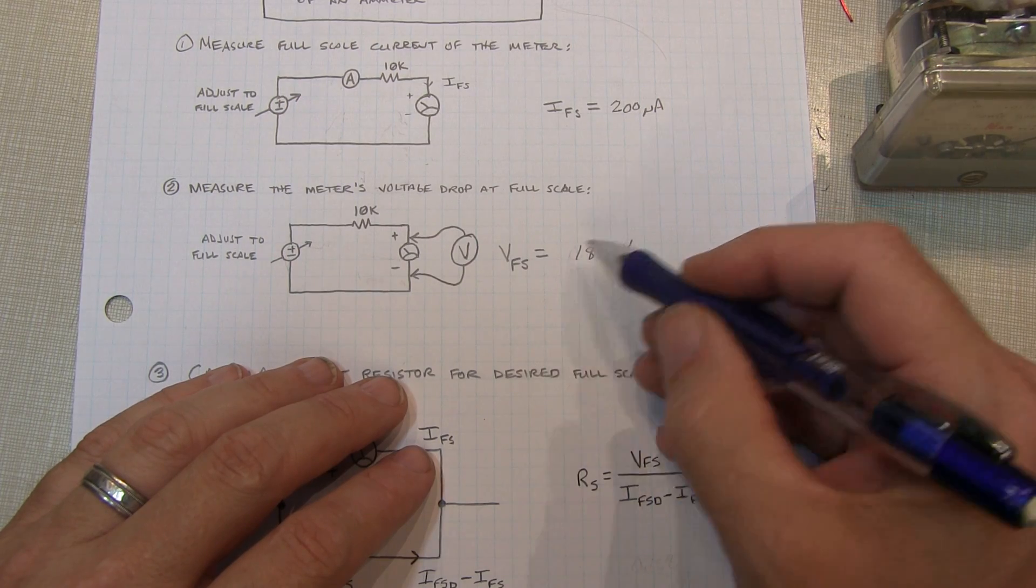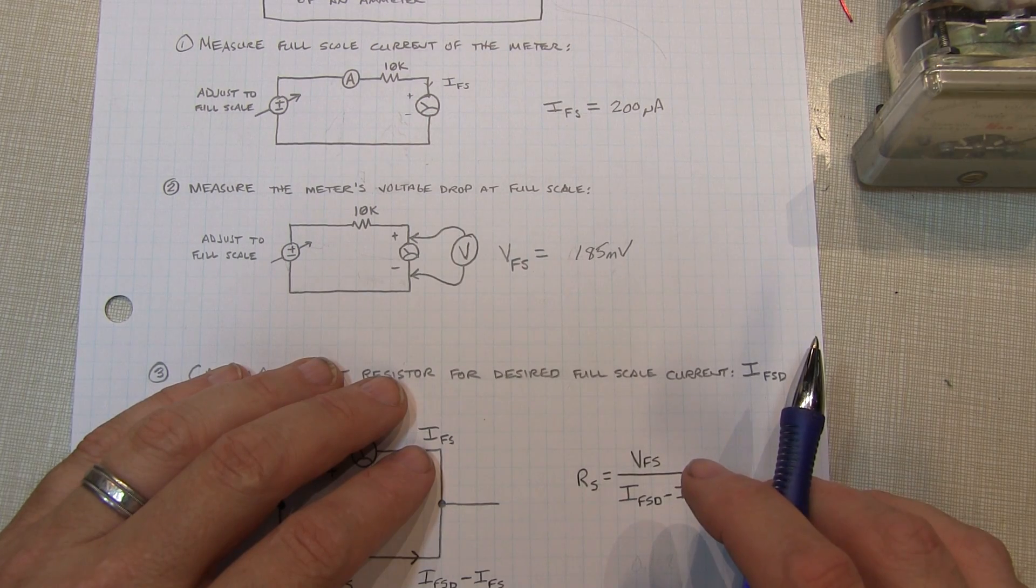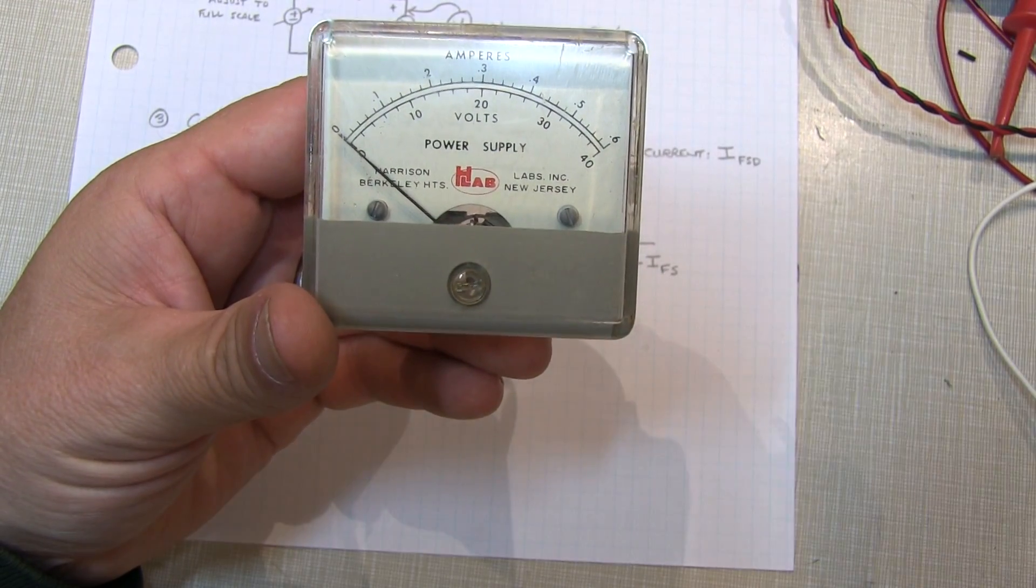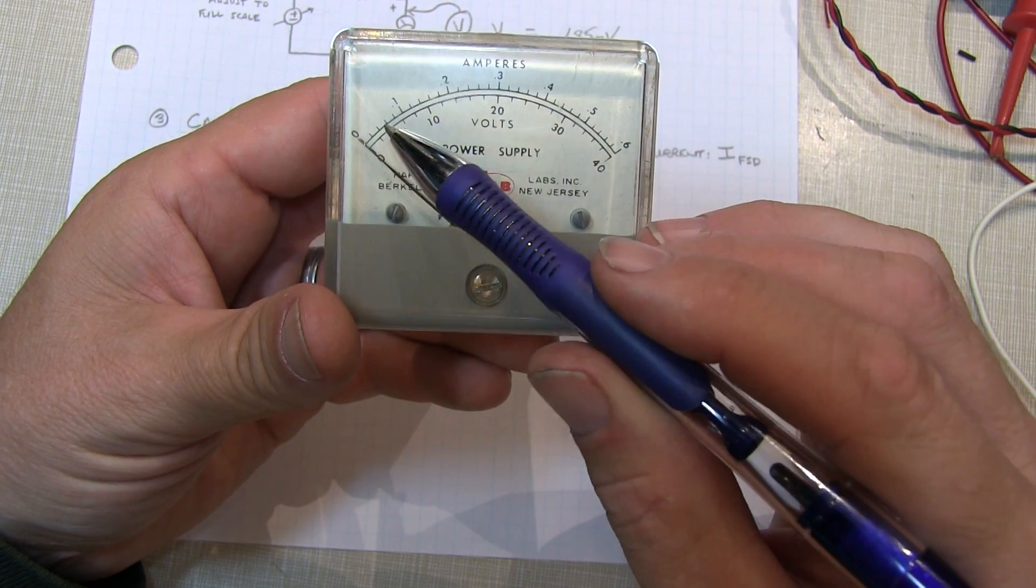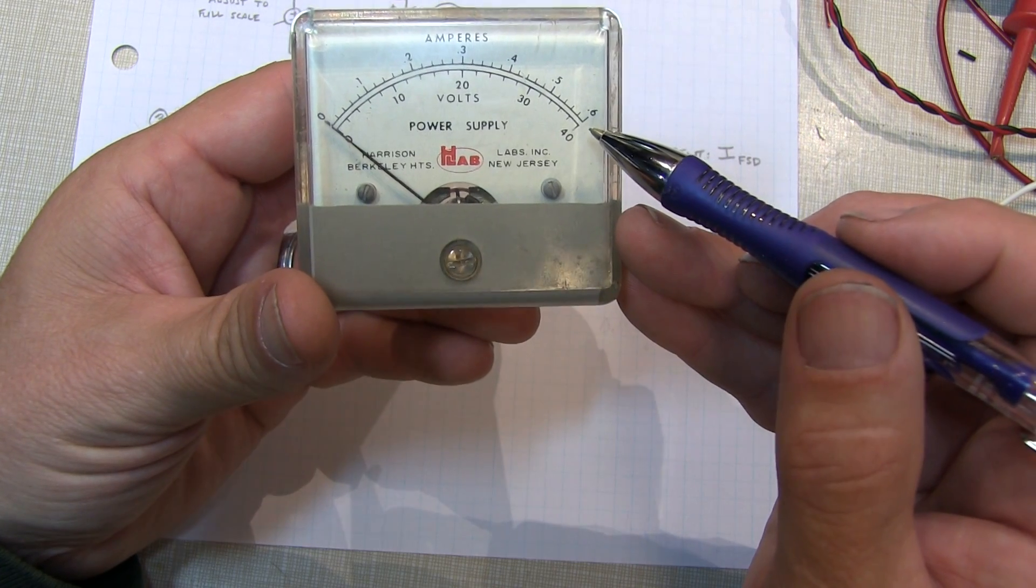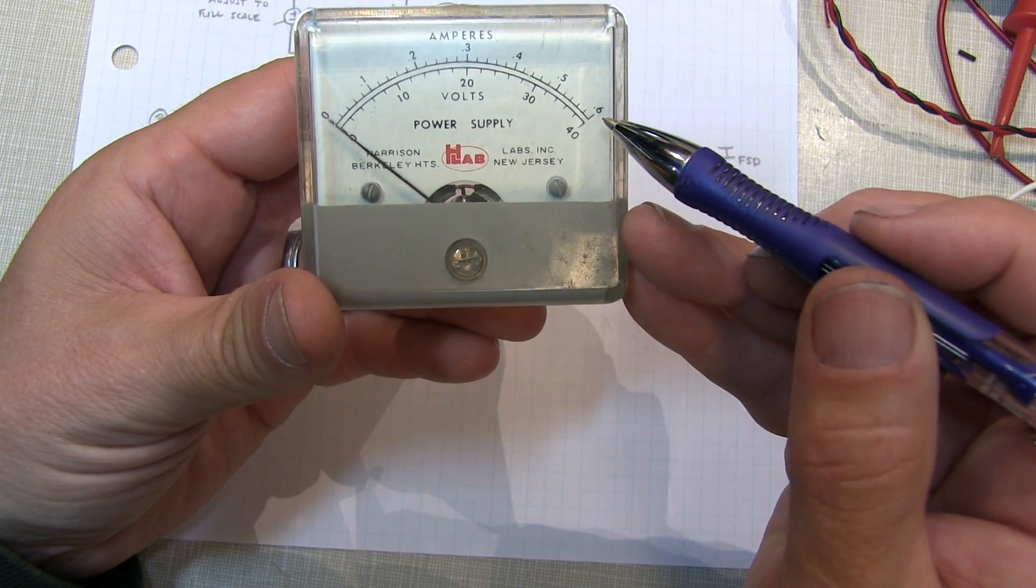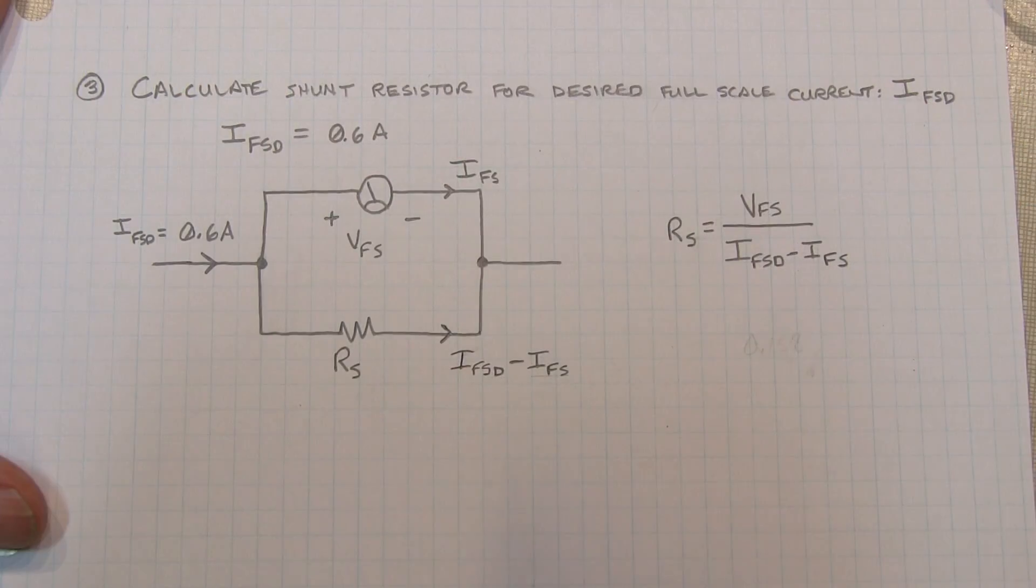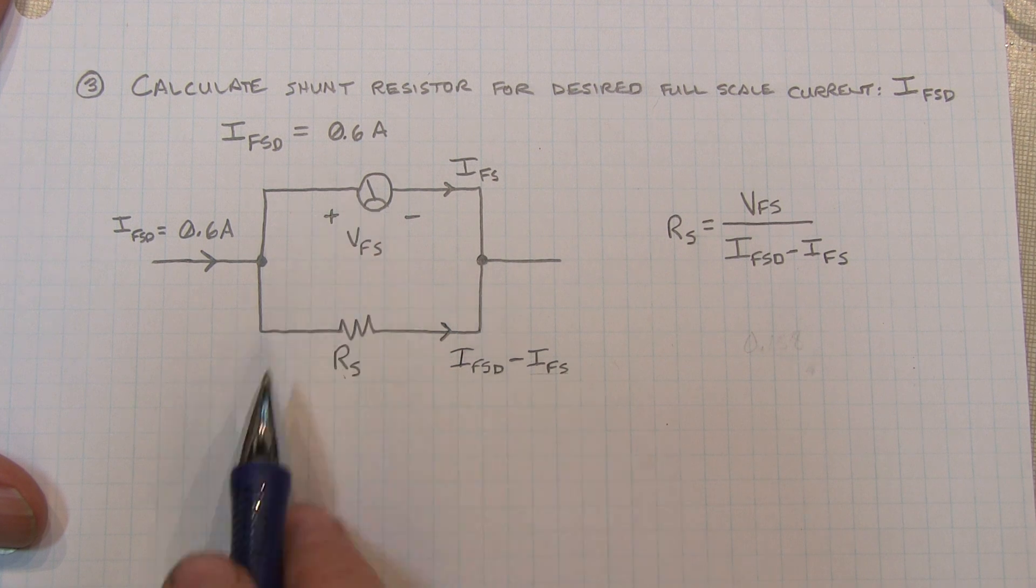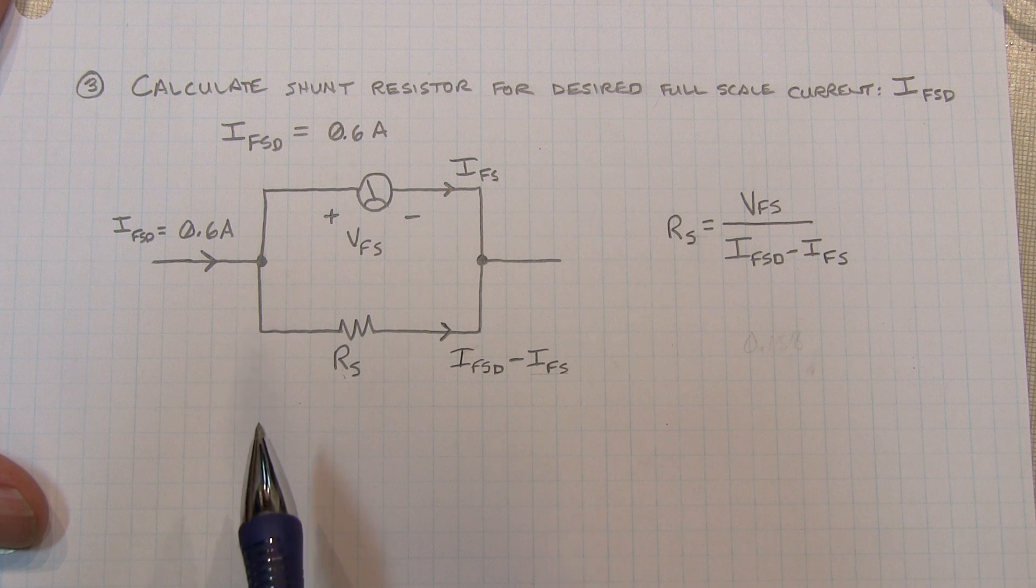So now that we know our full scale voltage is 185 millivolts, we have all we need to know to determine what the shunt resistor ought to be. Now this meter has an ampere scale on the top that goes up to 0.6 amps. So let's use that as an example here. So we'll set a target full scale reading of 600 milliamps.